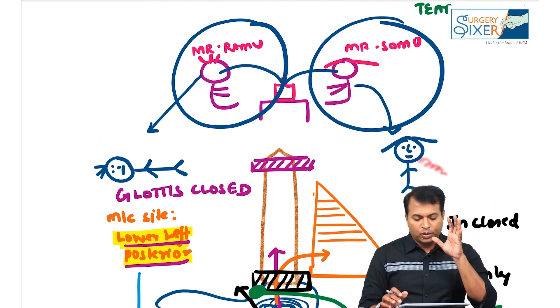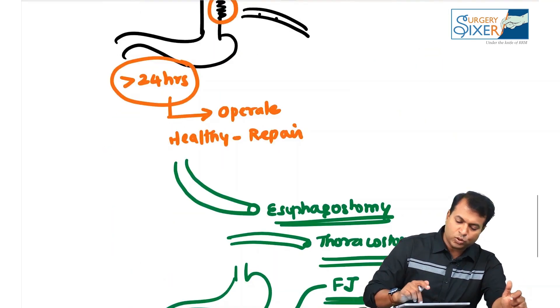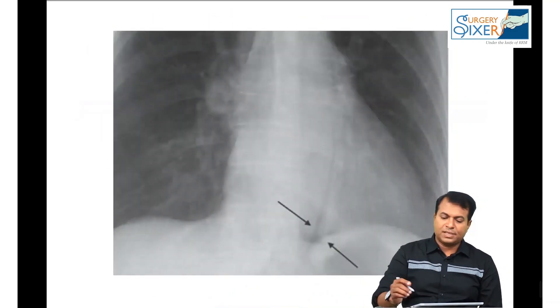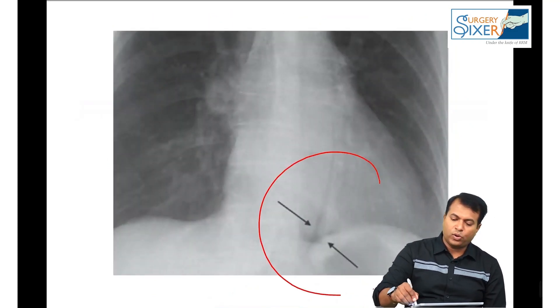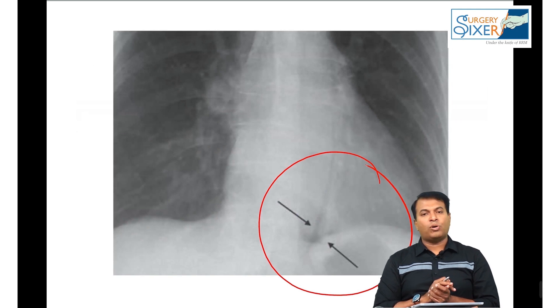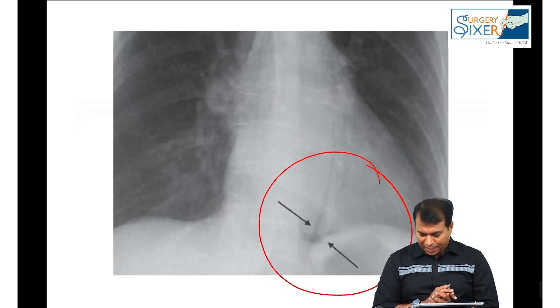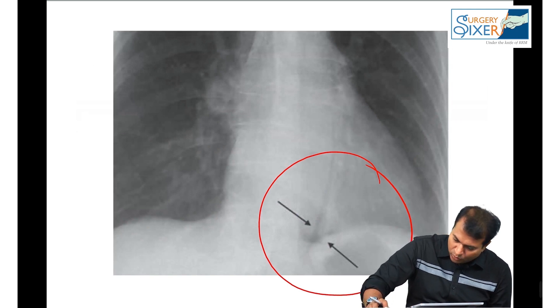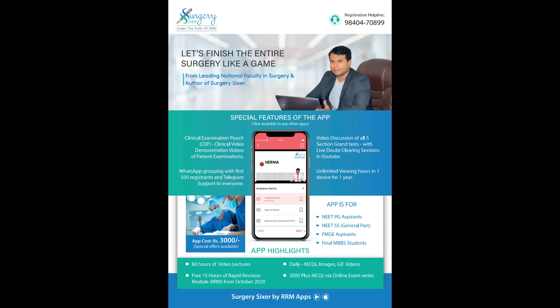These are two important topics for esophageal perforation. And the sign I mentioned — this sign is known as Naclerio's V-sign. This sign is seen in Boerhaave syndrome.